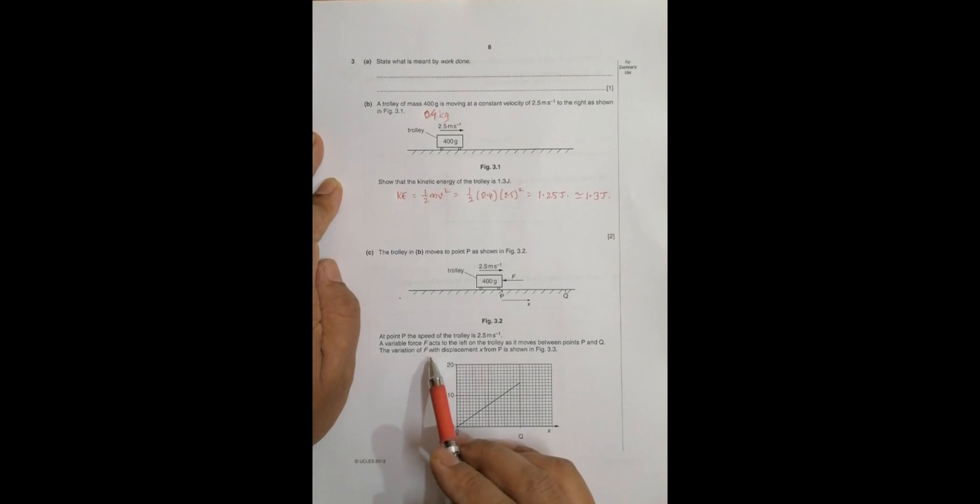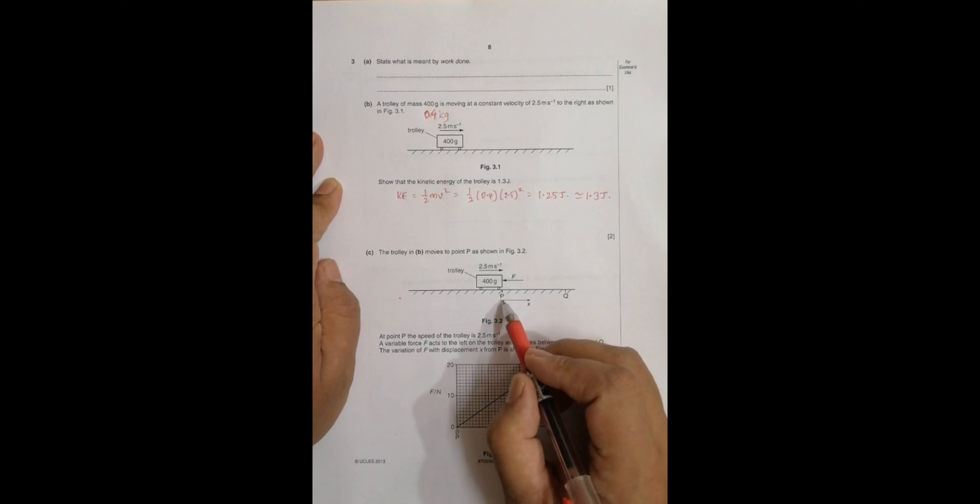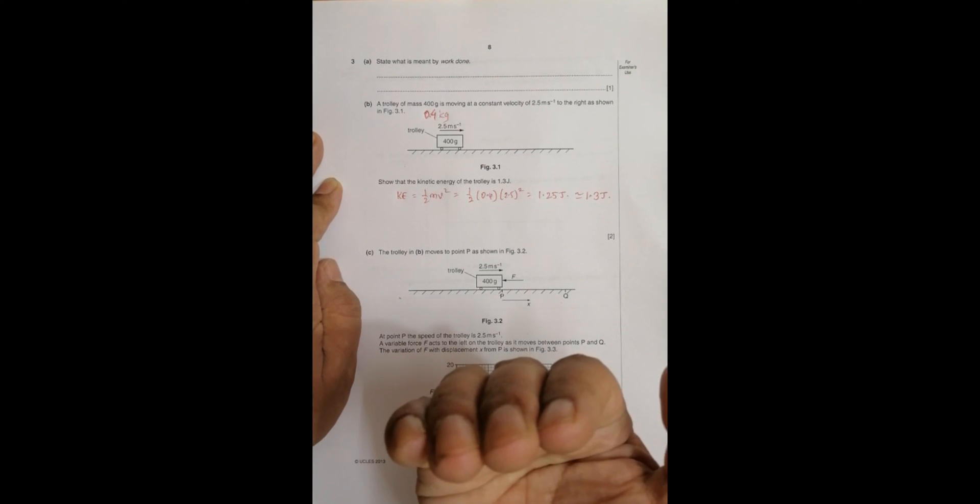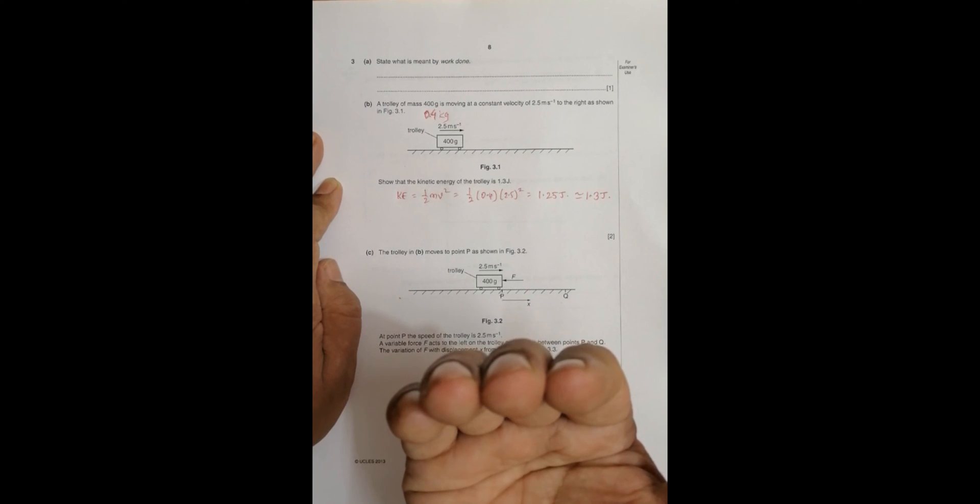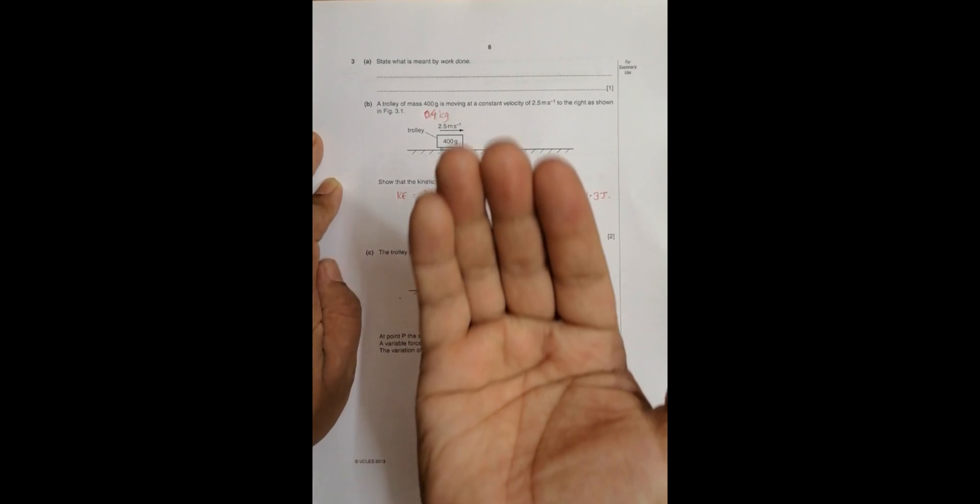The variation of F with displacement x from P is shown in figure 3.3. As the displacement increases, the force also has been increased. It is somewhat like in the case of applying our foot to brake in vehicles. We apply pressure on the brake pad like this. Same case here: as the displacement increases, the force also increases linearly.